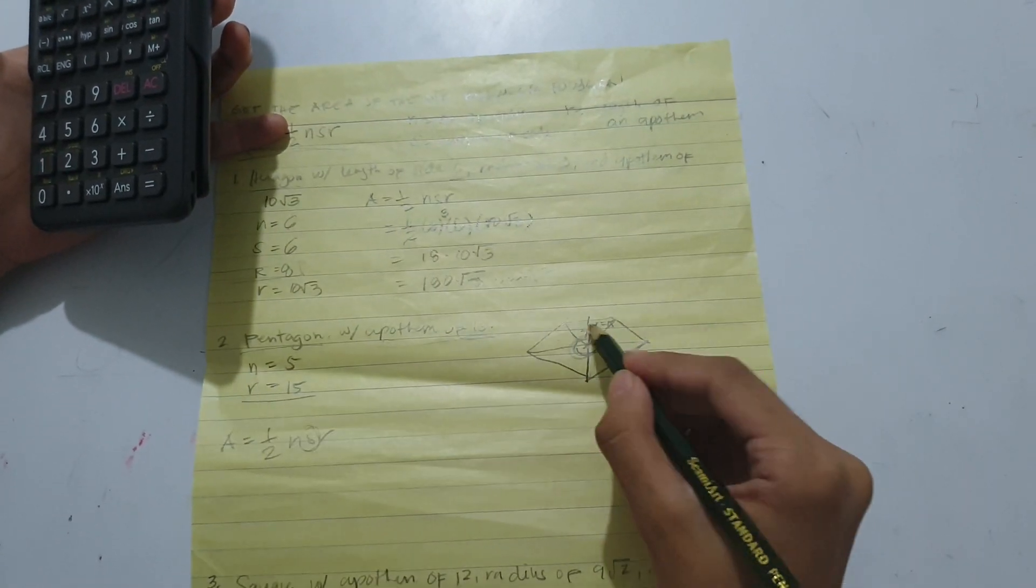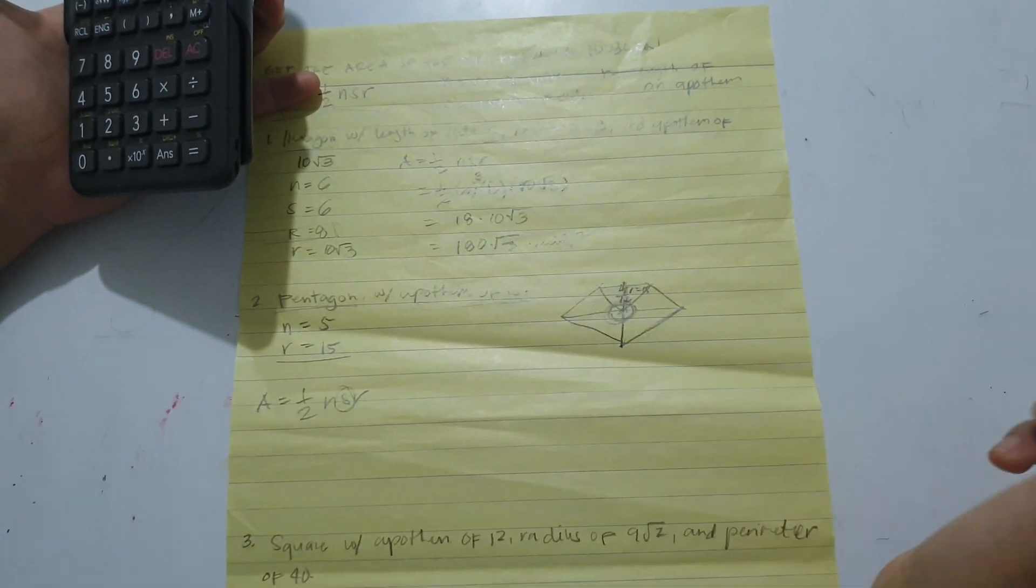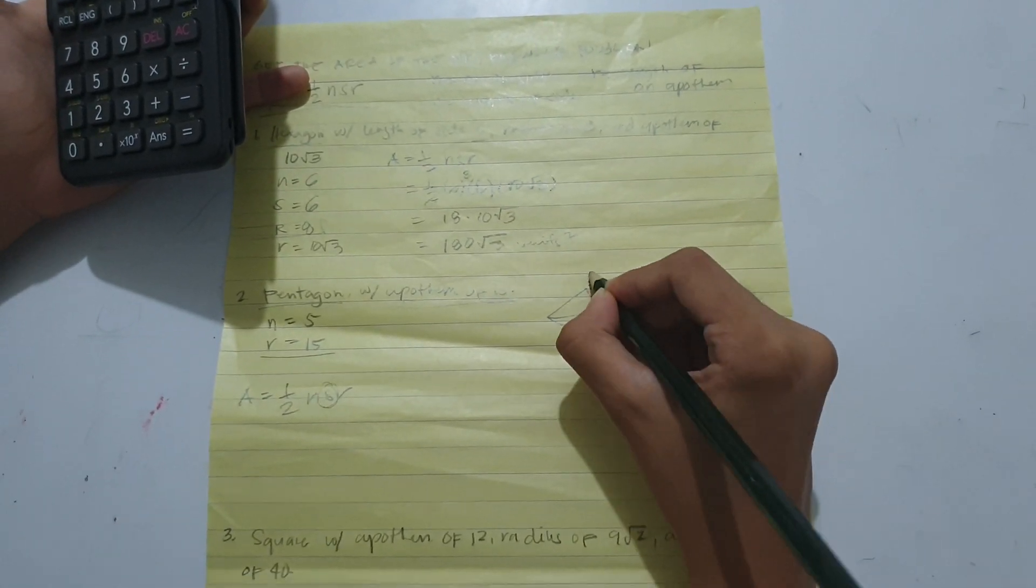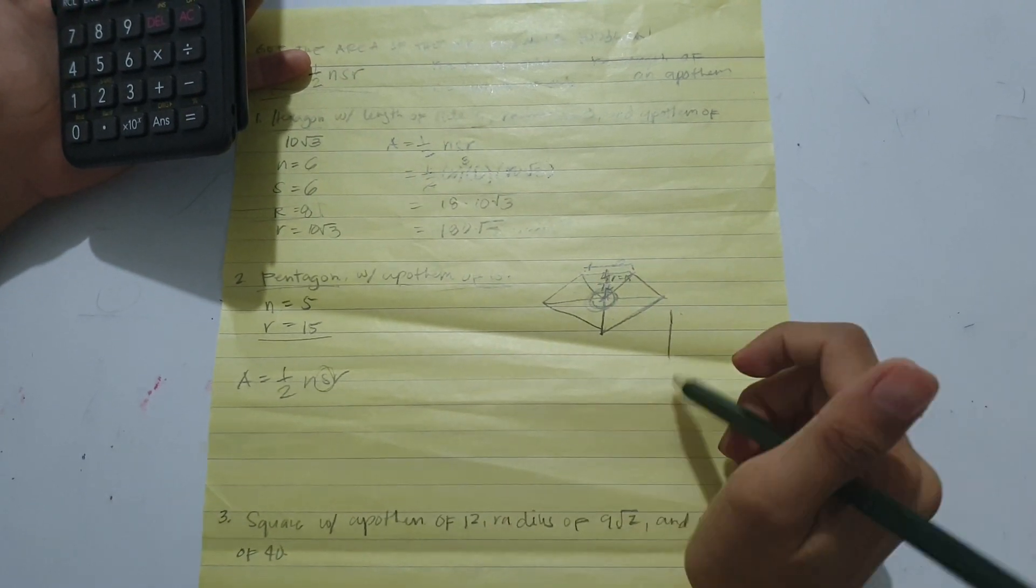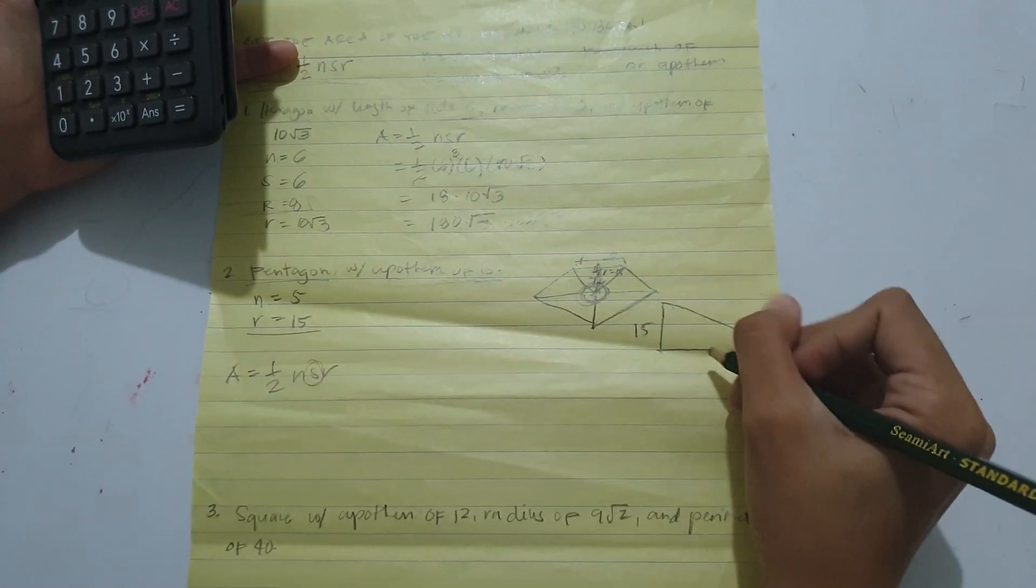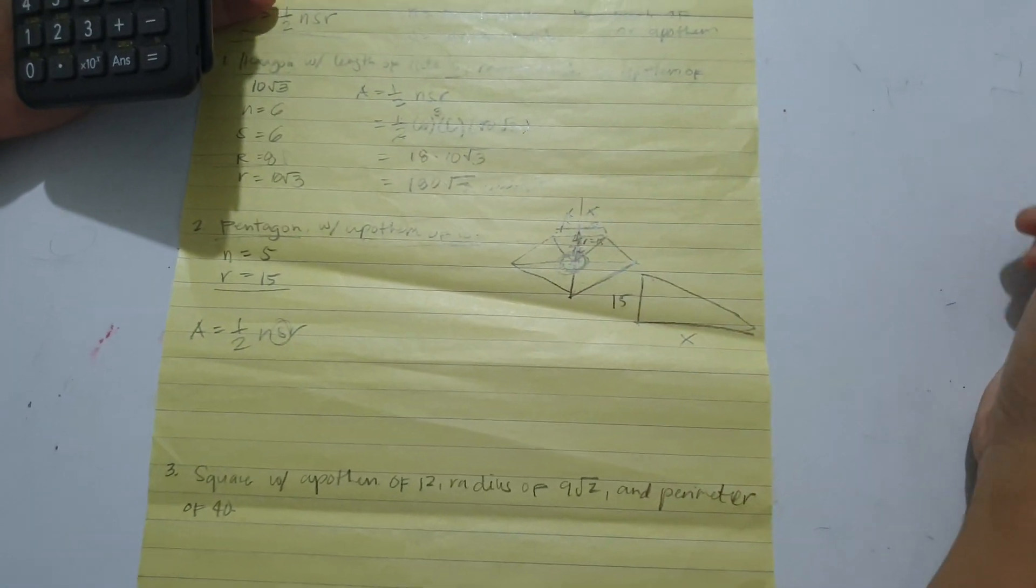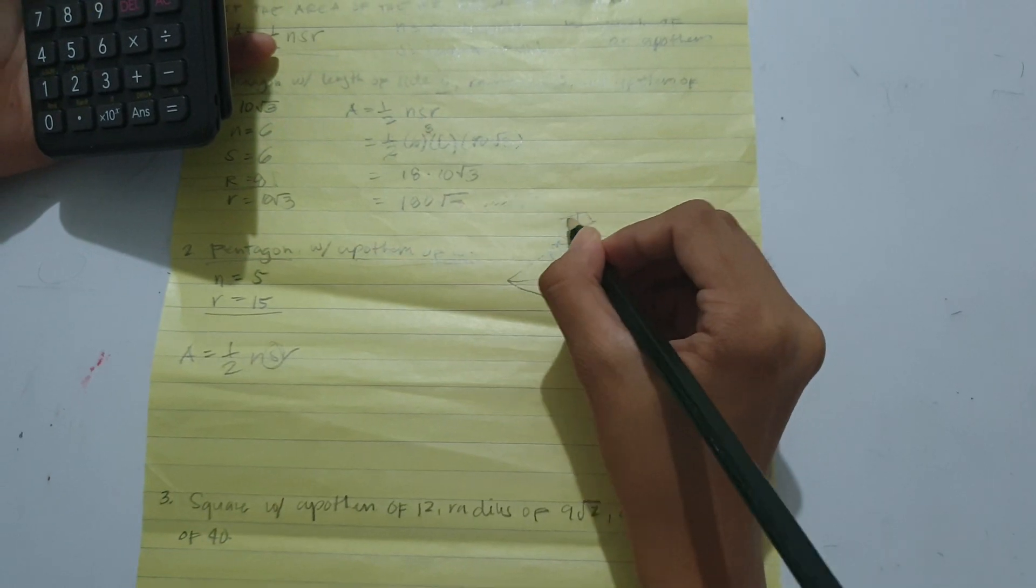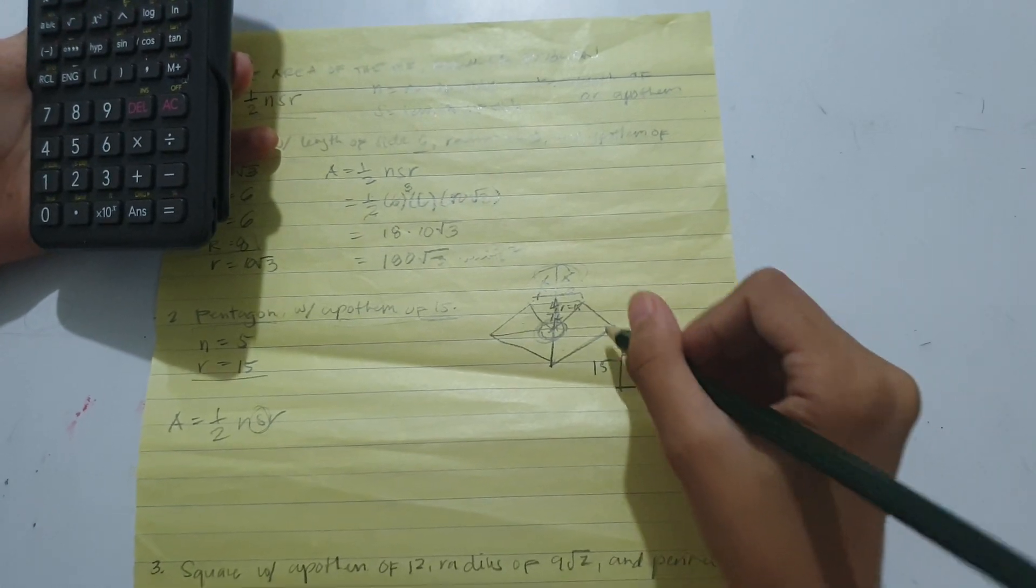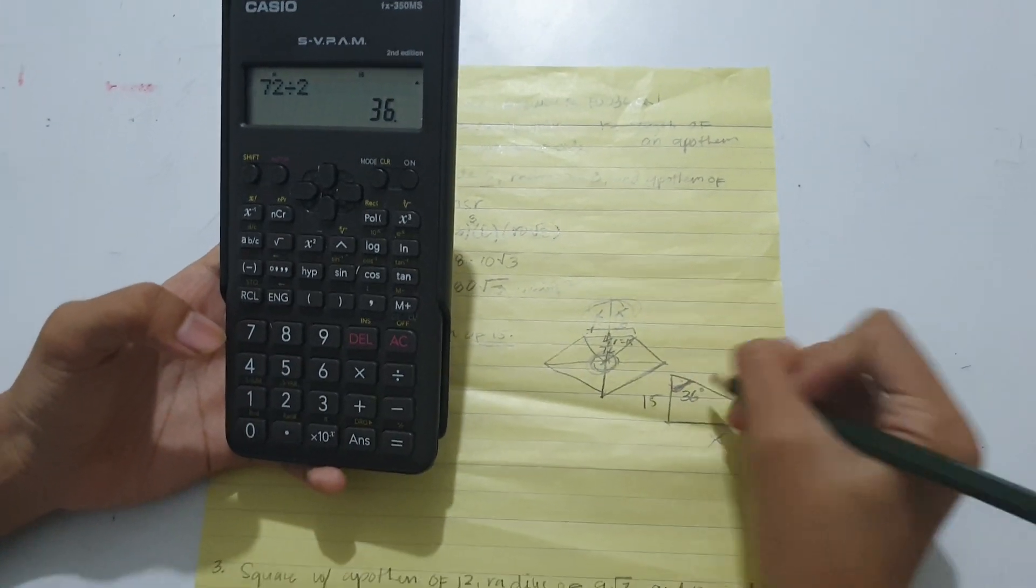R equals fifteen. We can easily apply SOHCAHTOA since this is a right triangle. Now we can get S. This is fifteen, this is X. Since we divided the triangle, this would be X as a whole. Now this wouldn't be 72 anymore since we divided this triangle. So 72 divided by two equals 36 degrees.